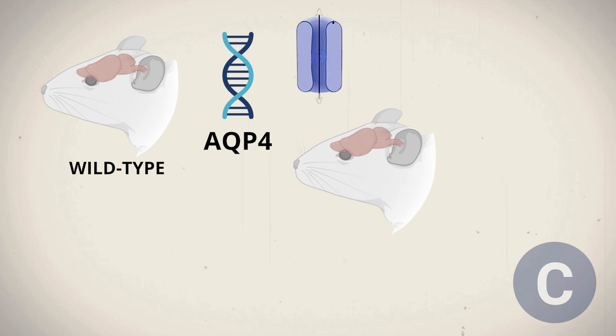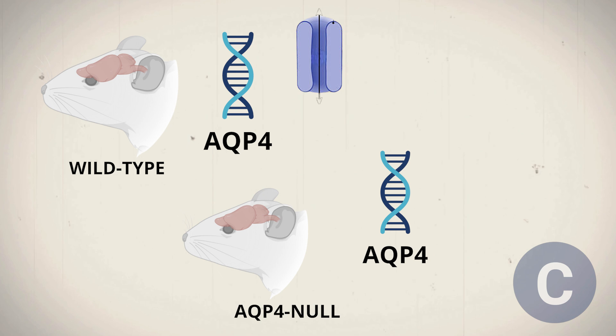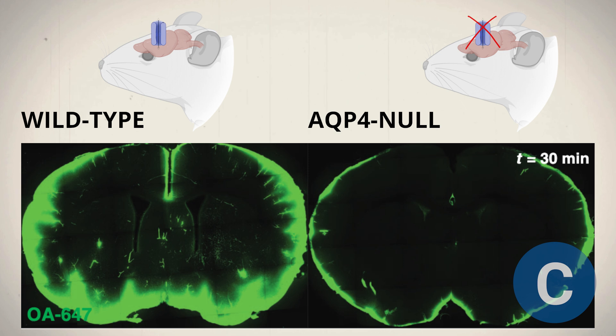The second group, called AQP-4 null, included genetically modified mice that lacked the AQP-4 gene and couldn't produce aquaporin-4. This setup allowed the researchers to observe any differences in cerebrospinal fluid flow in the absence of this protein. The images showed that in AQP-4 null mice, the tracer didn't spread through the brain tissue as much as it did in the wild-type mice.